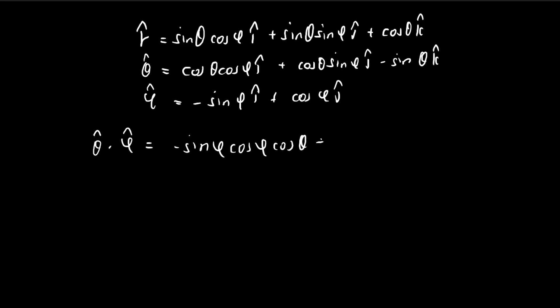And then the second component, I have sine phi, cosine phi, cosine theta. And then there's no k component, so it's 0 times negative sine theta, so it's 0. And then obviously you see here that these cancel out perfectly, so it is equal to 0. So both of these vectors are orthogonal.